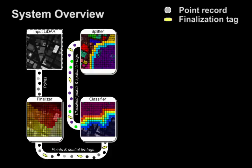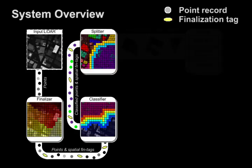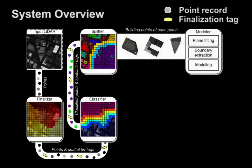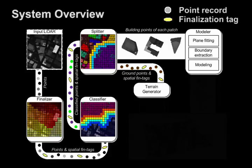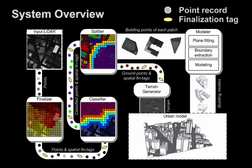Next, the splitter segments single building patches from the building and ground points, and outputs individual building patches and the ground point stream respectively. The building patches are tended to mesh models by the modeler, while the terrain generator simply rasterizes ground points and generates a terrain mesh. The final urban model is created by combining them together.